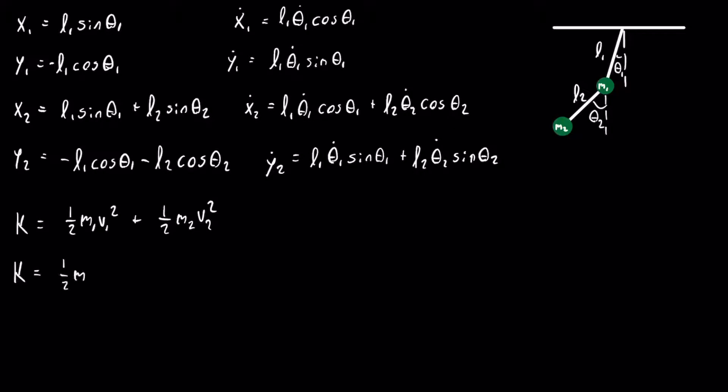Squaring each and summing them up, we get that k is equal to 1 half m times L1 squared times theta 1 dot squared times cosine squared theta 1 plus L1 squared theta 1 dot squared times sine squared theta 1.